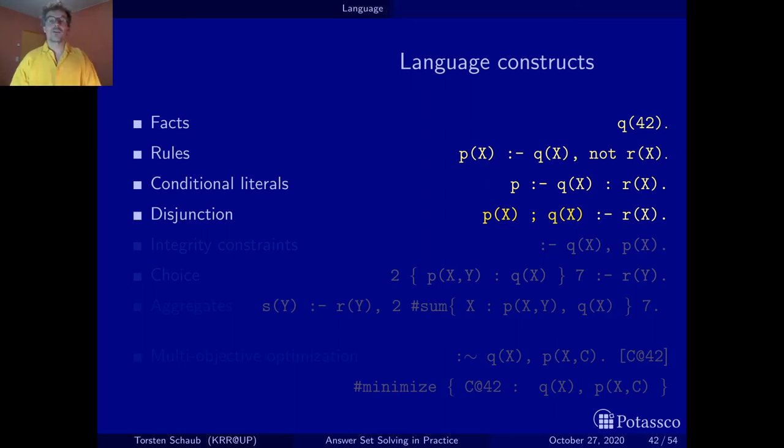The next language construct is called integrity constraint. In Harry Potter terminology, an integrity constraint is simply a headless rule, like this guy here, where you have no head. In ASP, headless means that it's a rule that can derive nothing. If these conditions in the body are true, you derive a contradiction. What an integrity constraint is, is a condition that must not be satisfied by any solution.